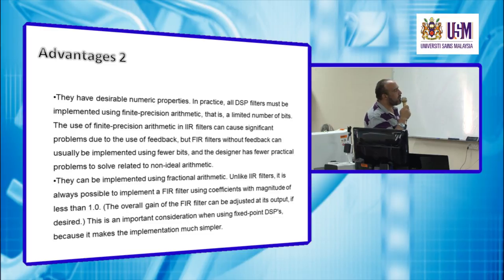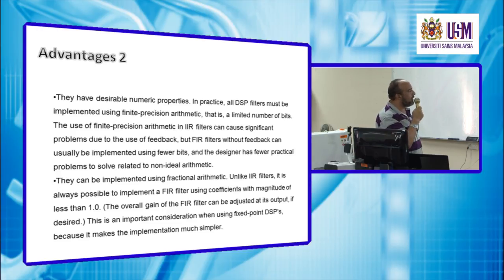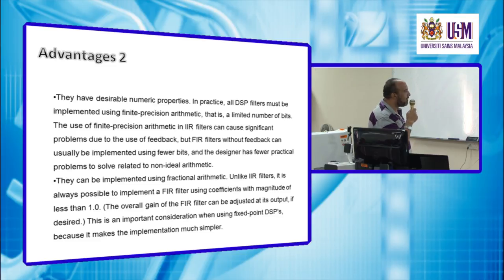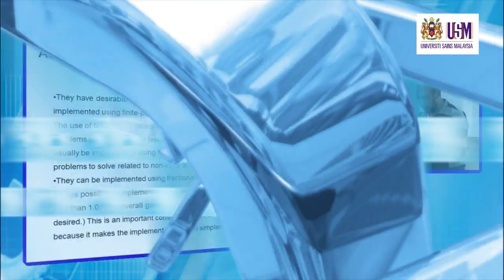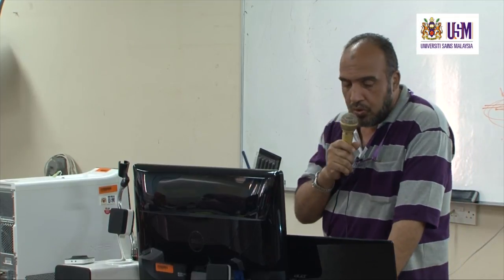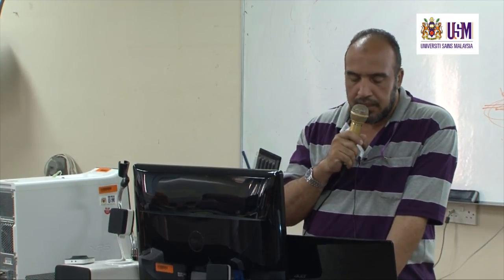Fifth, FIR filters can be implemented using fractional arithmetic. Unlike IIR filters, it is always possible to implement an FIR filter using coefficients with magnitude less than one. The overall gain can be adjusted at the output if desired, which makes implementation much simpler on fixed-point DSPs. Unfortunately we have gone past the time, so tomorrow we will talk about IIR filters and also start with the land seismic experiment.